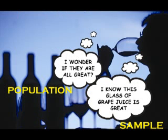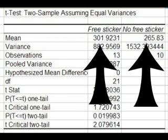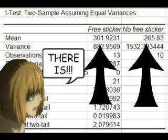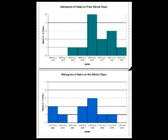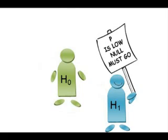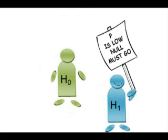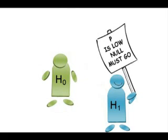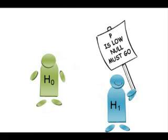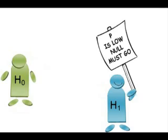We collect sample data to draw inference about the population. We know whether there is a difference between the sample means. We use information about the samples to decide, using the p-value, whether there is evidence to say that there is a difference between the population means.